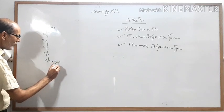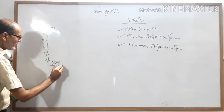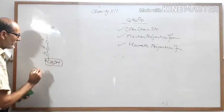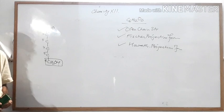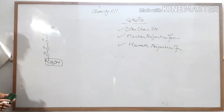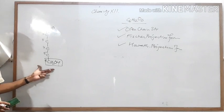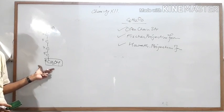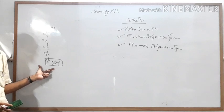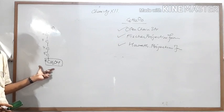Carbon number six has CH2OH attached. There are many types of glucose: D-plus glucose, L-plus glucose, D-minus glucose, and L-minus glucose.